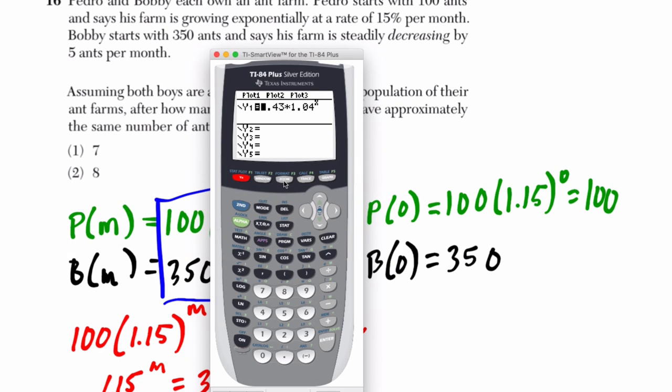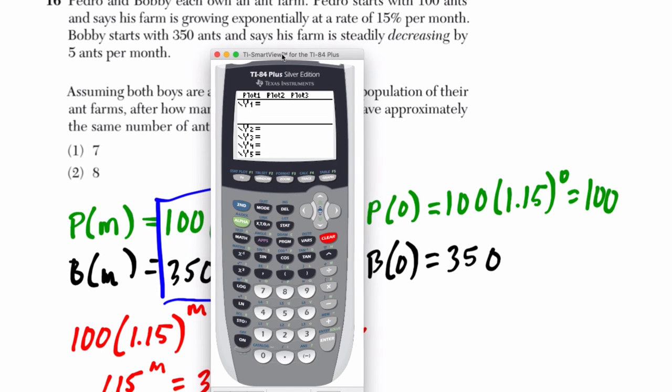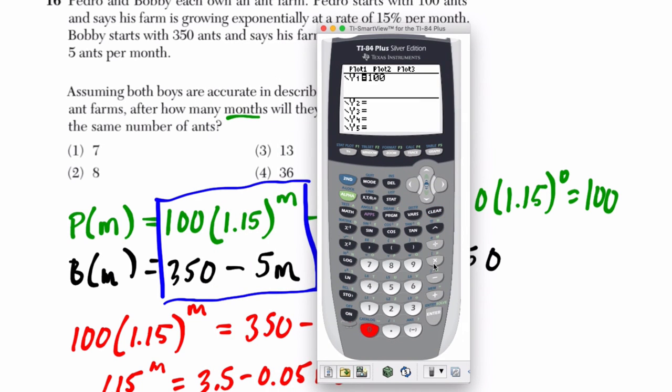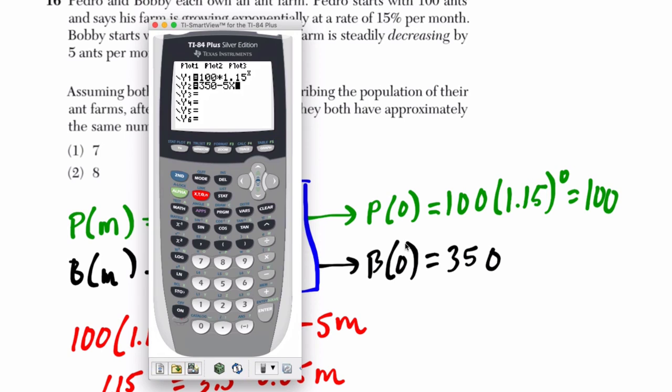So, go to y equals and clear up any old equations. And let's enter in what we have. We have Pedro at 100 times 1.15 to the x power and Bobby at 350 minus 5x. Our y-intercept for the linear equation is at 350 and 100 for the exponential. These are our y-intercepts. I just know that because that's the height we got when we plugged in zero. So, under our window, make sure your y-axis captures that. We have to go up to at least 350, so I'll say 375 on the y-axis. And then when we graph it, let's see if we get something.